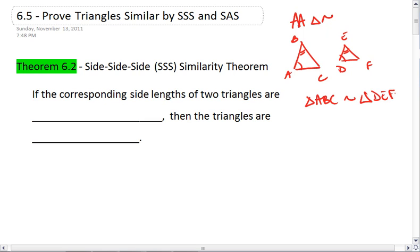The other two ways we can prove triangle similarity is SSS and SAS. Theorem 6.2, which is the Side-Side-Side or SSS Similarity Theorem, tells us that if the corresponding side lengths of two triangles are proportional, then the triangles are similar.